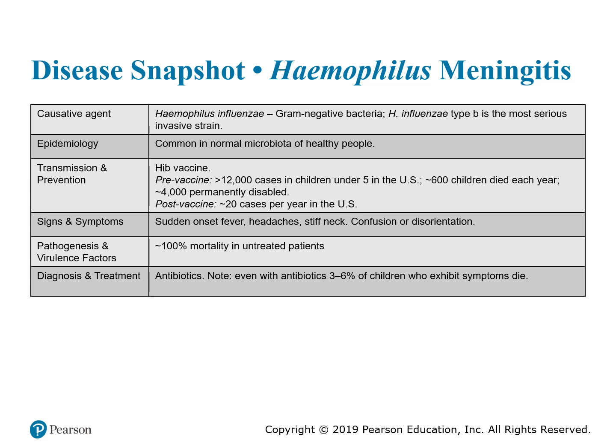Haemophilus influenzae type B is the most serious of the invasive strains. It can exist as normal microbiota in healthy individuals but can progress to an opportunistic infection. If left untreated, it has nearly a 100% mortality rate, making early detection and treatment essential.